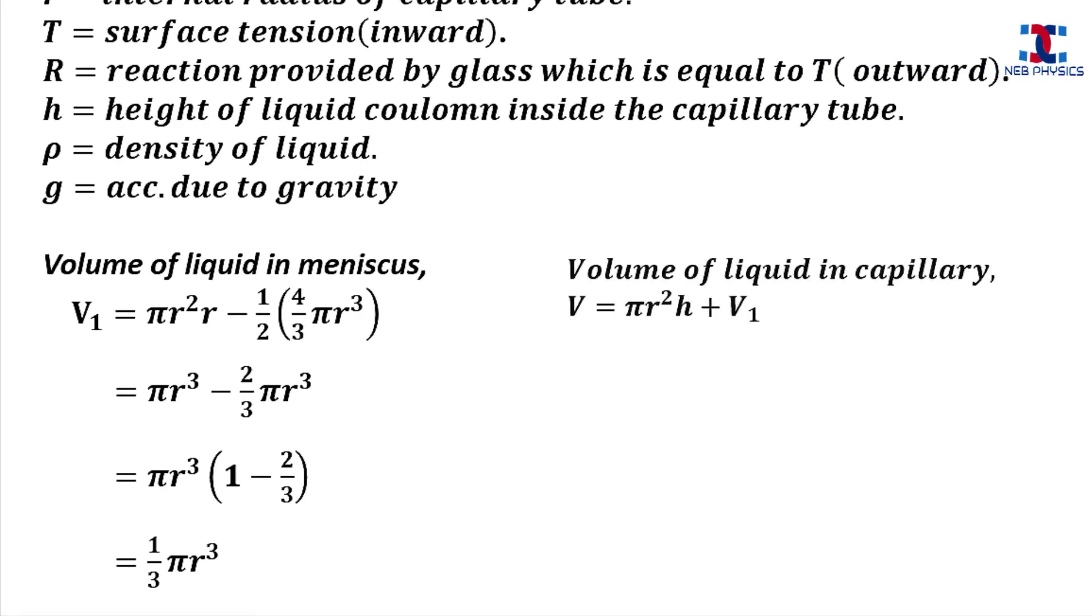So we write the total volume of liquid in the capillary v = πr²h + v₁. Here, πr²h is the volume of the liquid in the blue highlight. And solving this we get v = πr²(h + 1/3 r).